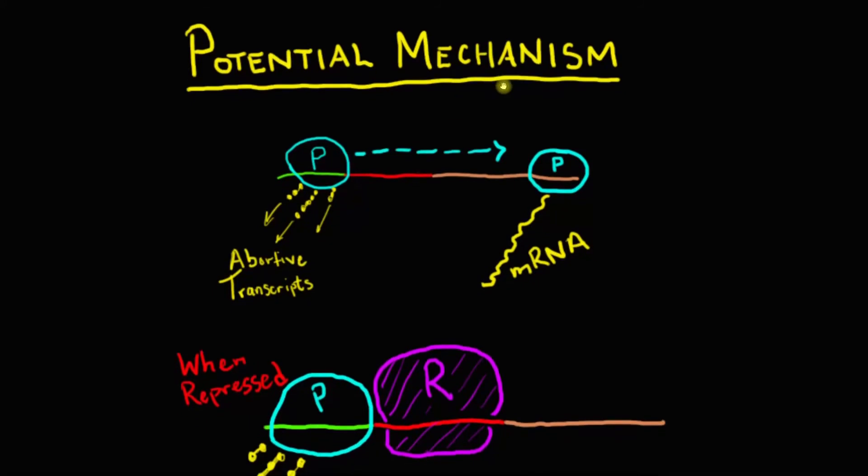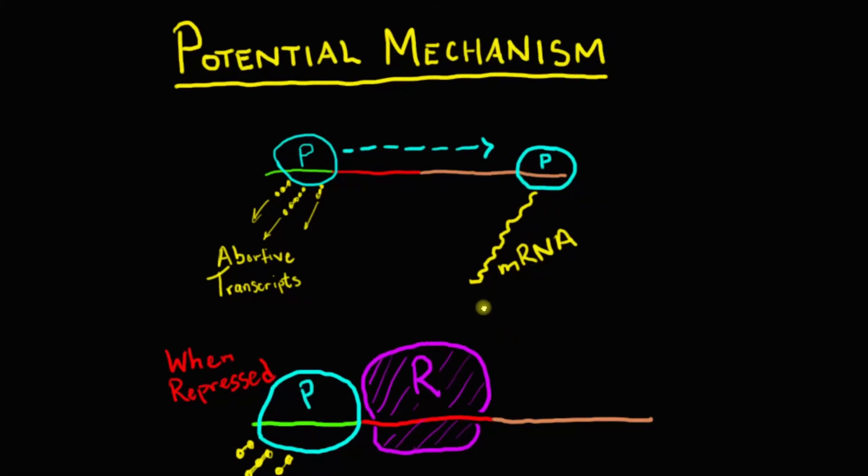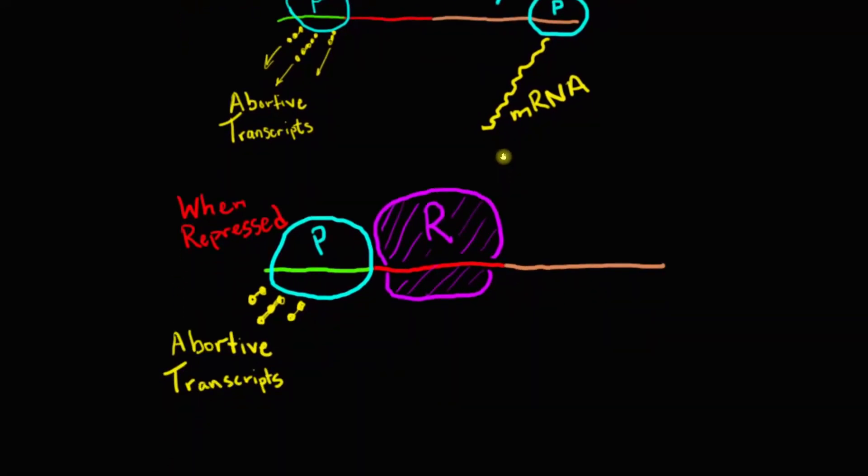So the potential mechanism of repression at this point seems to be that when we have no repressor, we form these abortive transcripts and RNA polymerase is actually going to be able to transcribe the full gene and we get our mRNA, but when you see the repressor being bound, we see still abortive transcripts being made, indicating that RNA polymerase binds, forms an open complex, but it's just unable to get past this repressor. It's unable to elongate.